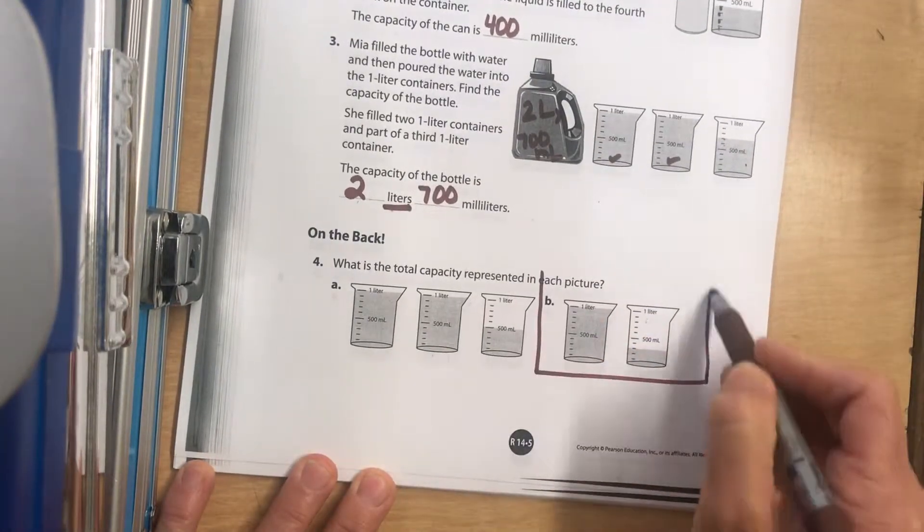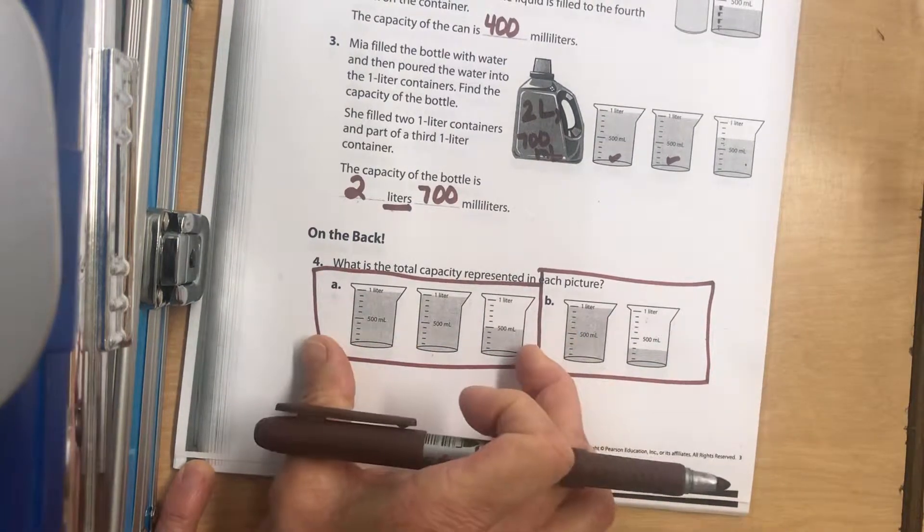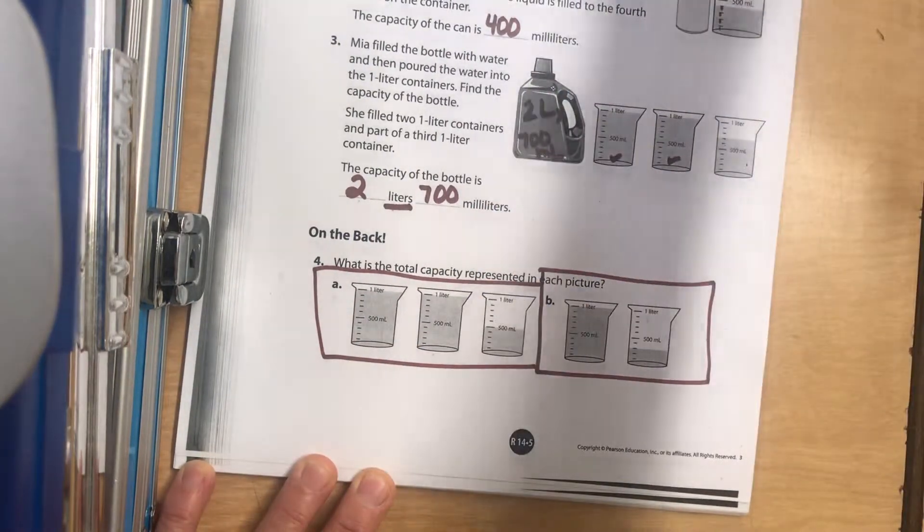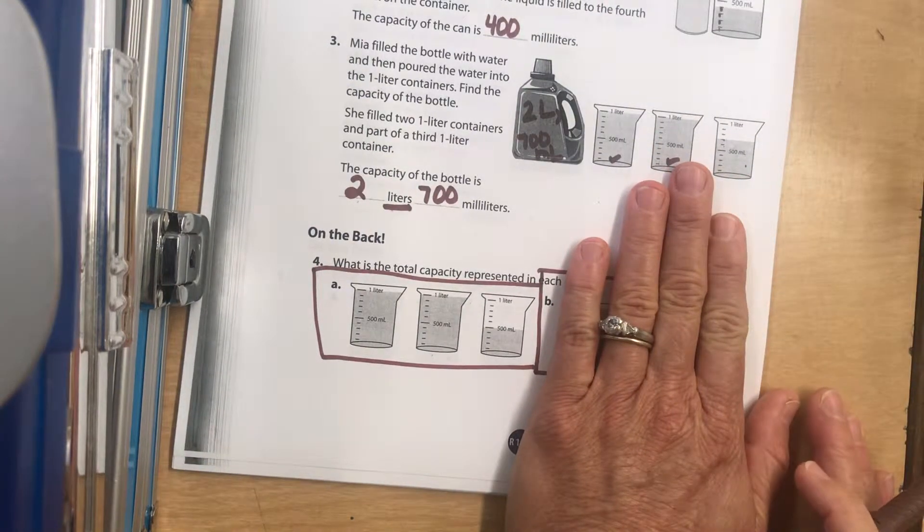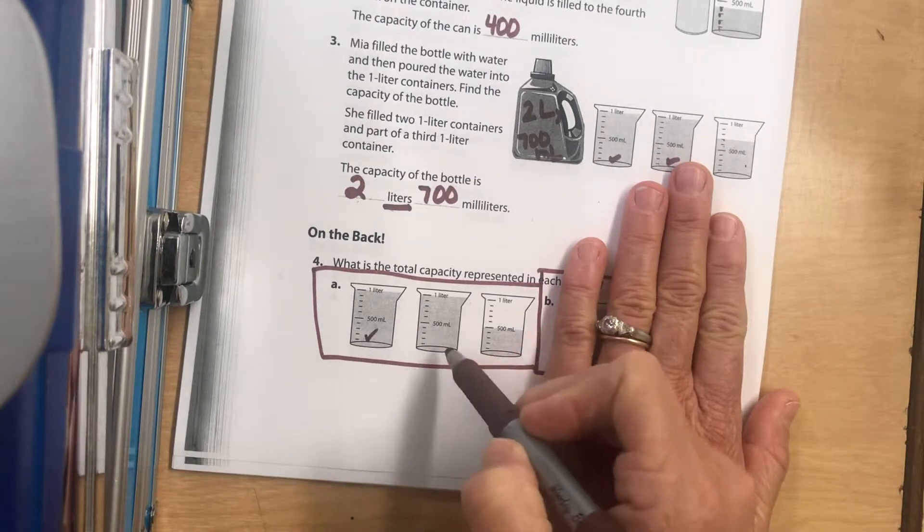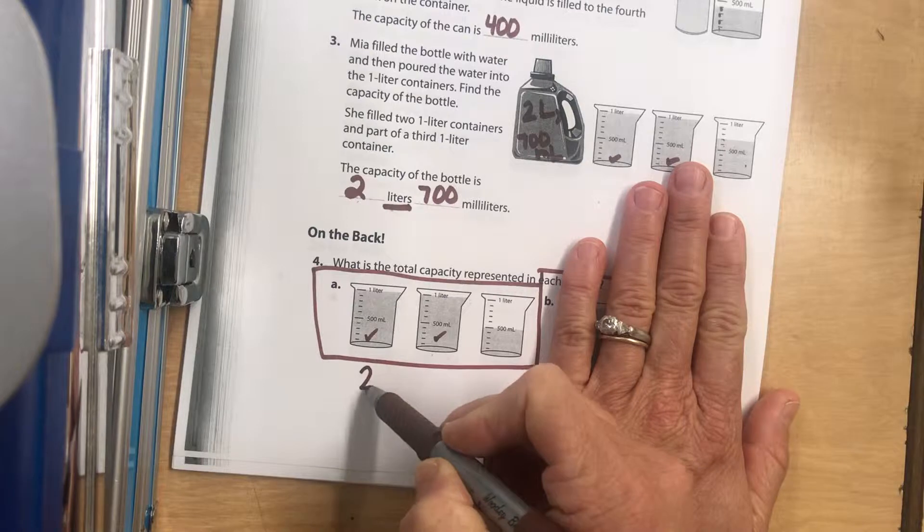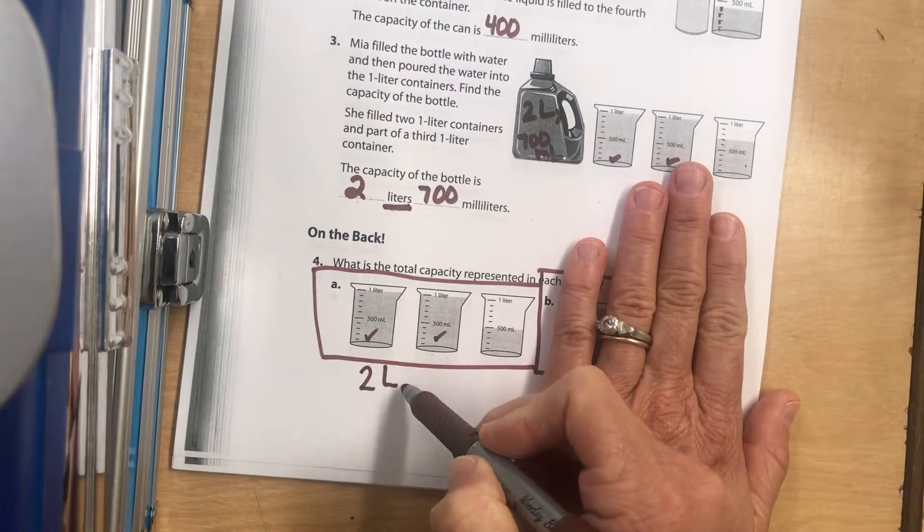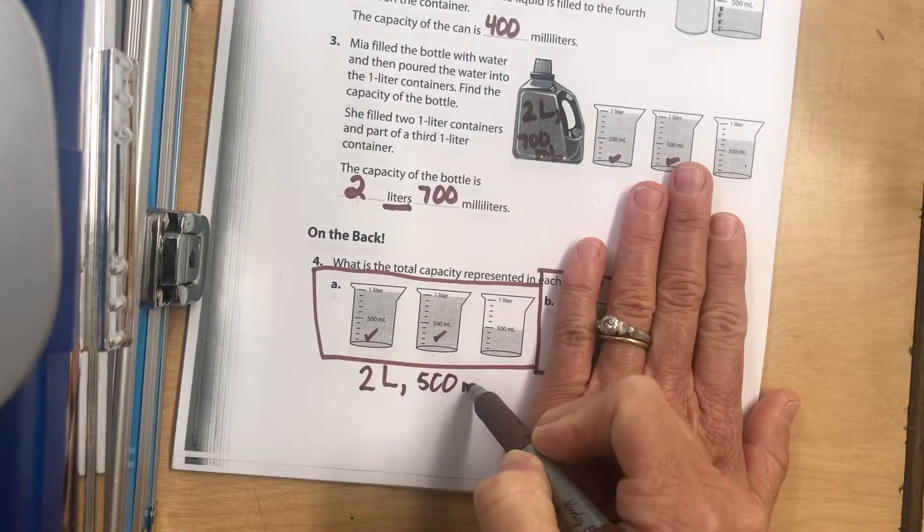What's the total capacity represented? This is one liter and two liters. We can write it two different ways: two liters and five hundred milliliters,